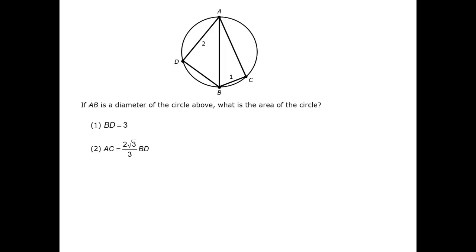There is a key fact for this question, which is that any triangle inscribed in a circle with the diameter as one side is a right triangle. This is a fairly random piece of geometry to have to know for the test, but it is included in the math standards listed in the official guide.